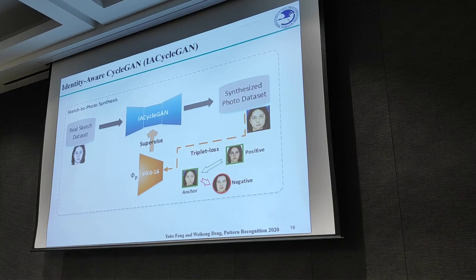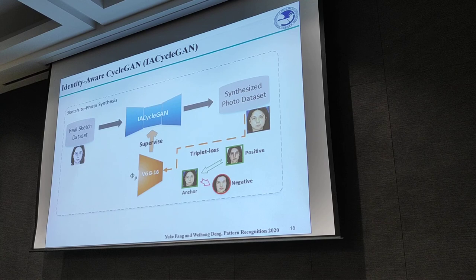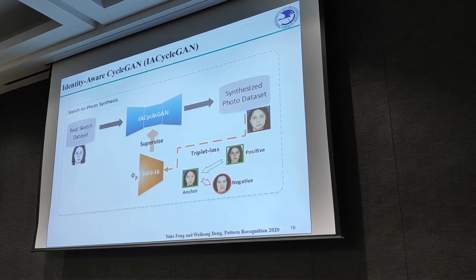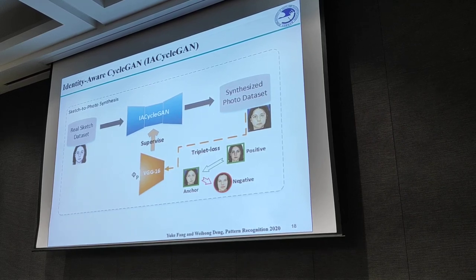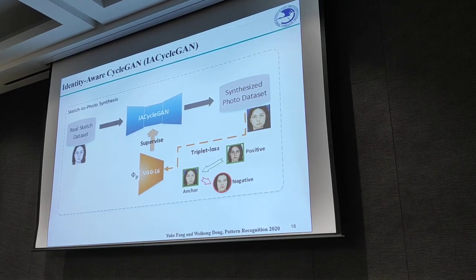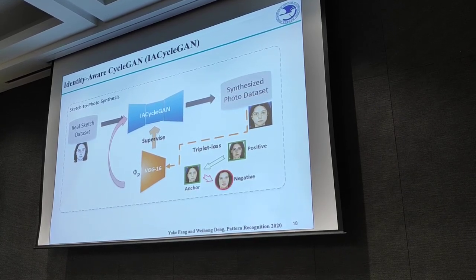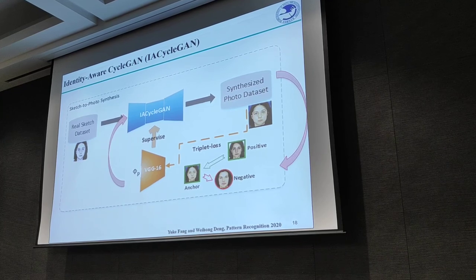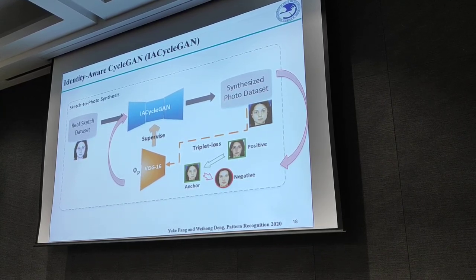Moreover, we found that not only can the recognition model supervise the synthesis network for better image quality, but in turn the generated images can be used to retrain the recognition model for better identity features. The synthesis model and the recognition network can mutually optimize in a closed loop, improving both synthesis quality and recognition performance simultaneously.